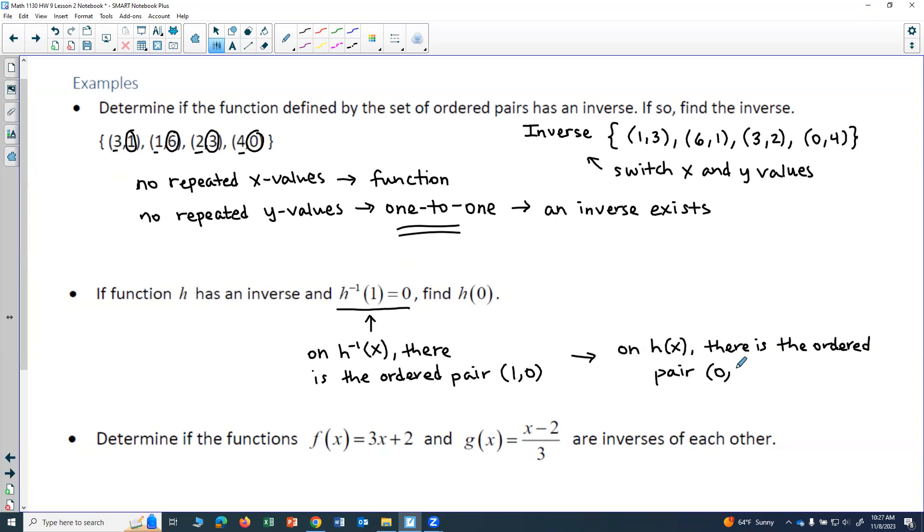Because I switched the x and y values. So (1,0) on the inverse would translate to (0,1) on the original function. So basically, h of 0 has to equal 1. So 1, we just switched the x and the y values.